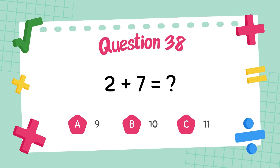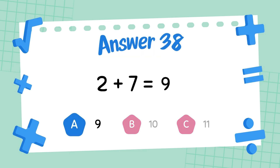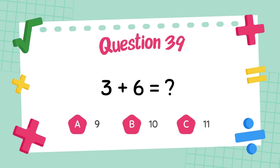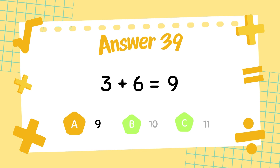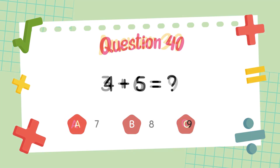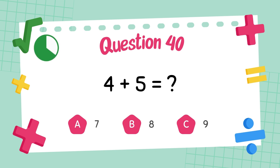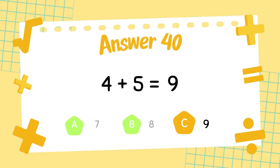What is 2 plus 7? The answer is 9. What is 3 plus 6? What is 4 plus 5? The answer is 9.